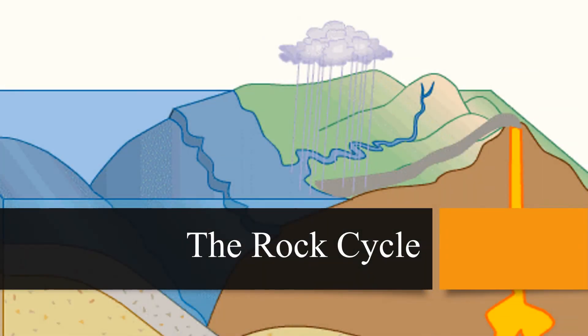Hello everybody and welcome to the promised lesson: the rock cycle. The rock cycle is a series of processes that create and transform the types of rocks in Earth's crust. As we saw in the previous lesson, there are three types of rocks: sedimentary, igneous, and metamorphic. Each of these rocks are formed by physical changes such as melting, cooling, eroding, compacting or deforming.